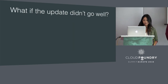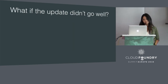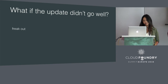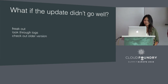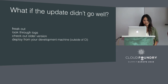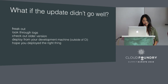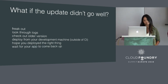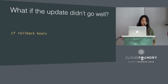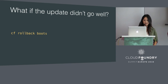So what if the update didn't go well? Normally you would look through the logs to see what was previously deployed, check out that SHA, and maybe deploy from your development machine outside of CI where anything could go wrong. In v3, it could be as simple as one rollback command. Because v3 keeps track of your app's last five droplets, you can rollback to any one of them.